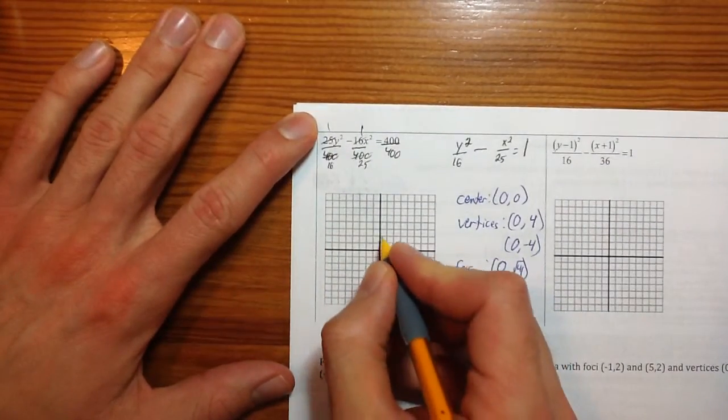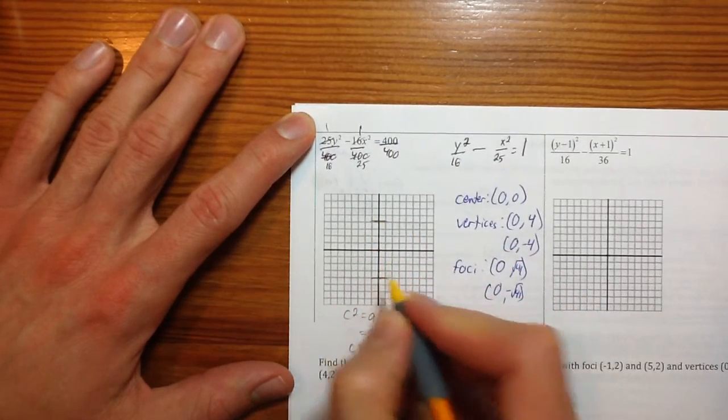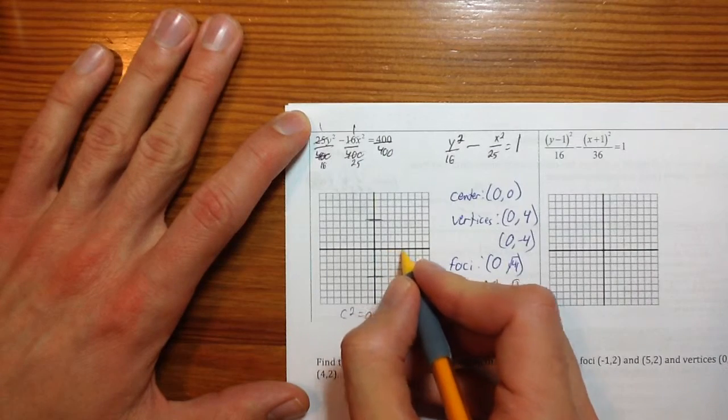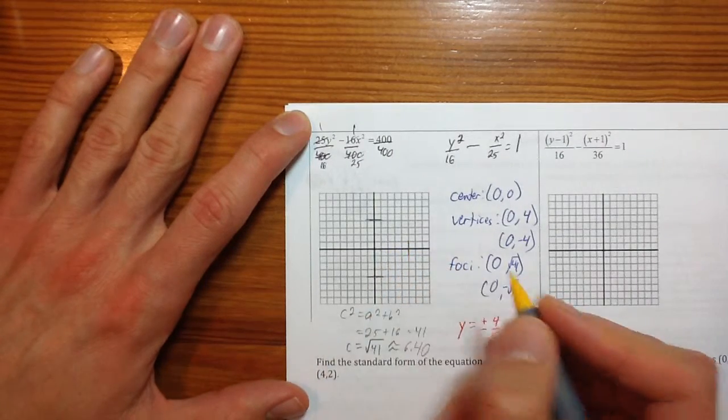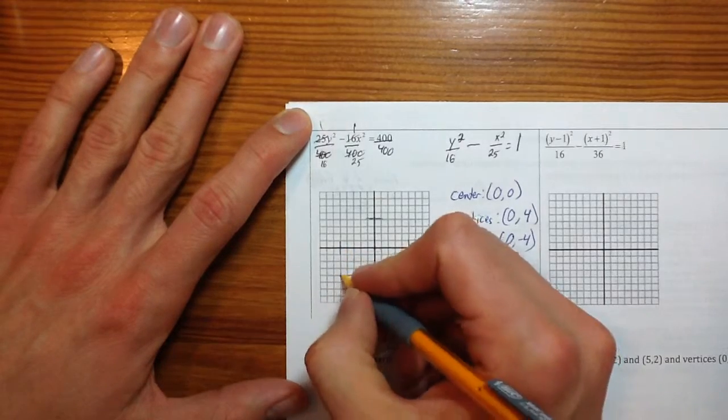I'm going to go up 4, down 4, left 5, and I went right when I said left. 1, 2, 3, 4, 5. There we go. Here's your box.